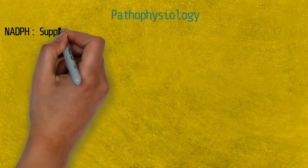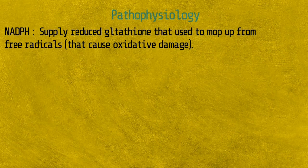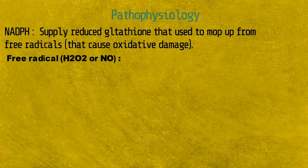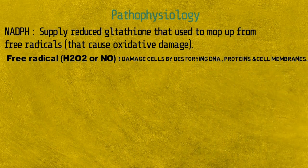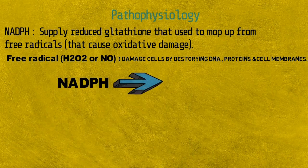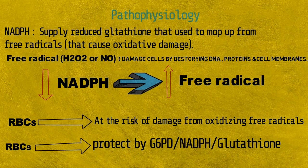Normally, NADPH maintains the supply of reduced glutathione in cells, which is used to eliminate free radicals that cause oxidative damage. Free radicals like hydrogen peroxide (H₂O₂) or nitric oxide (NO) damage cells by destroying DNA, proteins, and cell membranes. Red blood cells are at risk from oxidizing free radicals, but they are protected by the glucose-6-phosphate dehydrogenase / NADPH / glutathione system. When there is a defect in this system, free radicals destroy red blood cells.